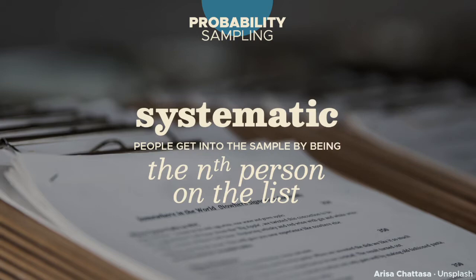The next strategy, systematic sampling, works with a list of people as well. You select a random positive integer, then get every nth person in that list. So if you get 8, you sample every 8th person — or, when waiting to survey people on the street, ask every 8th person who passes by. People don't really like ambush interviews, and much less so surveys.